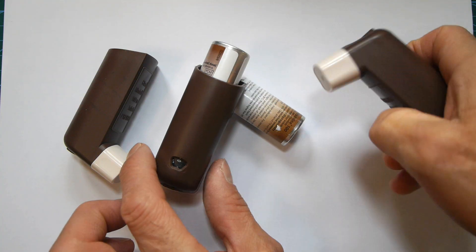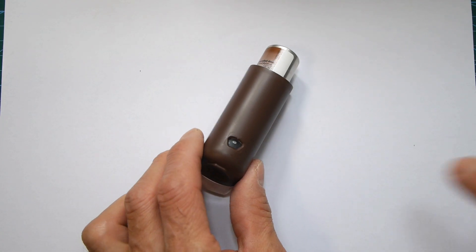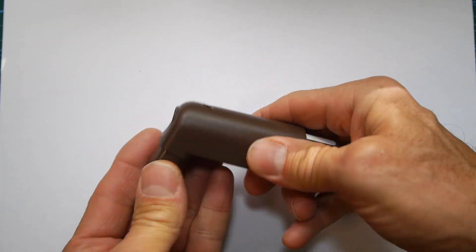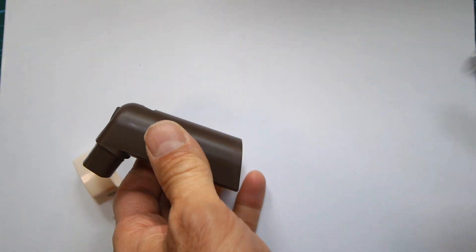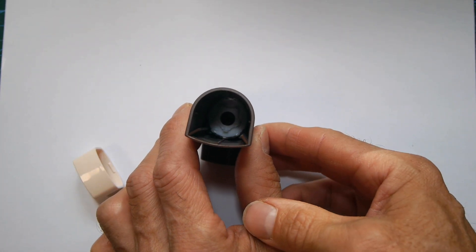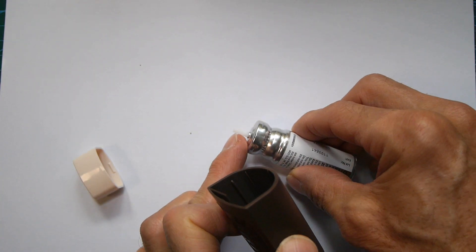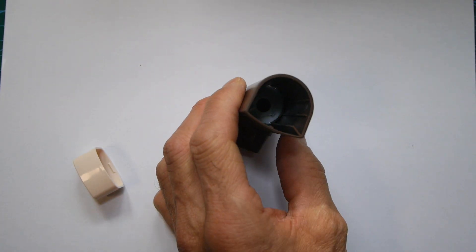So the first thing we've got to do if we're going to understand how these inhaler counters work is we need to remove the inhaler from the brown case. So we'll just take it apart and take the canister out and deep inside there you might see that white bit is the bit that picks up the tip of the canister.